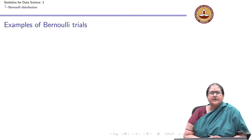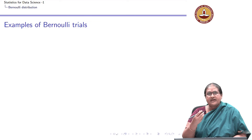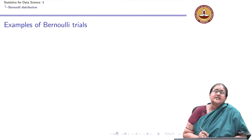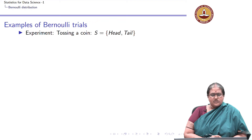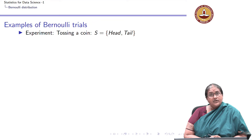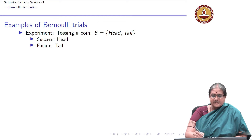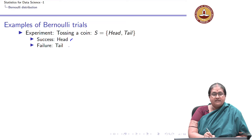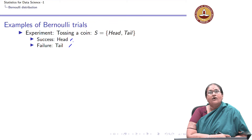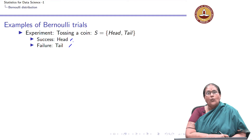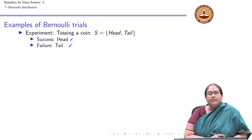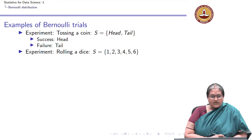Let us look at examples of Bernoulli trials. Starting with tossing a coin: the outcomes are head and tail. I can define success to be a head and failure to be a tail. So tossing a coin once can be called a Bernoulli trial.